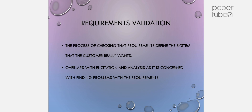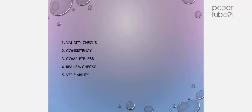Requirements Validation is the process of checking that requirements defend the system that the customer really wants. It overlaps with elicitation and analysis, as it is concerned with finding problems within the requirements. The main validation criteria are Validity and Consistency.